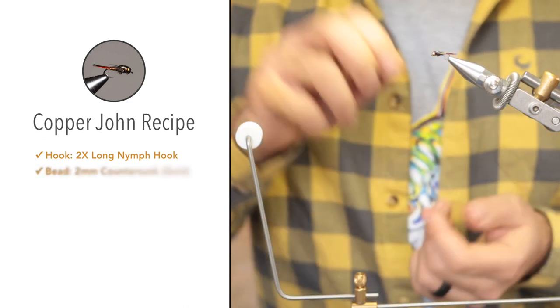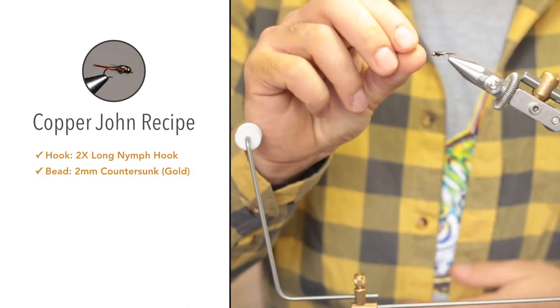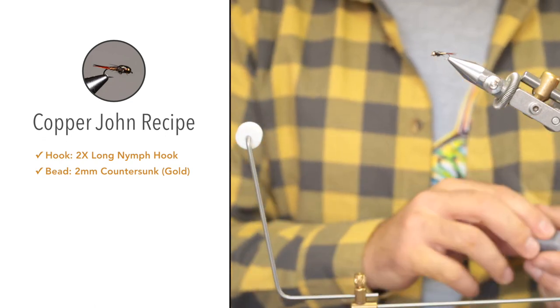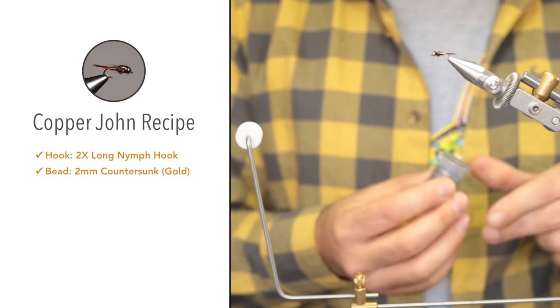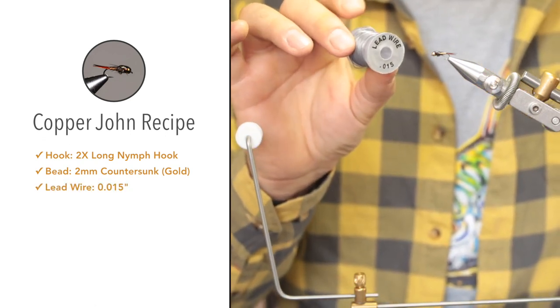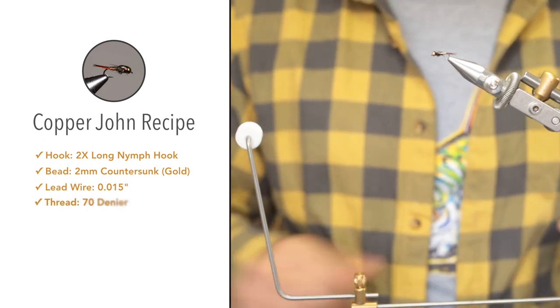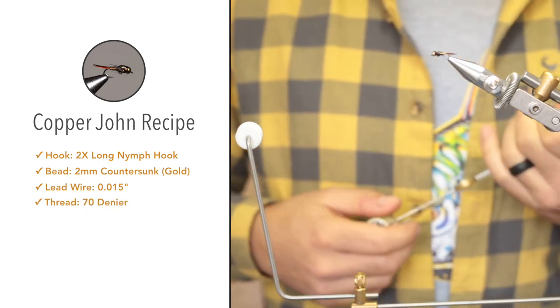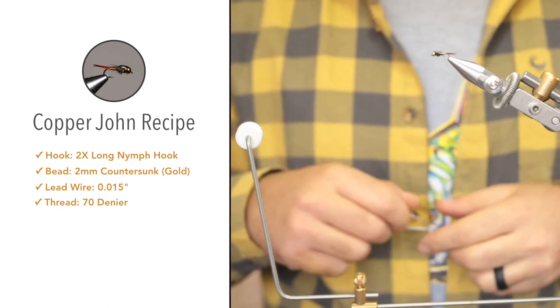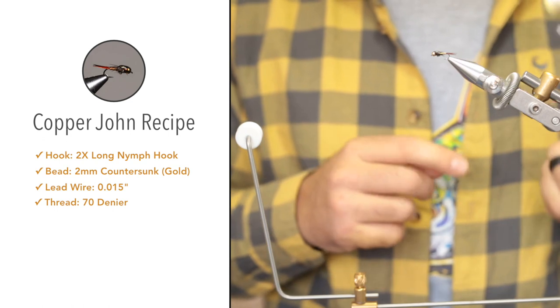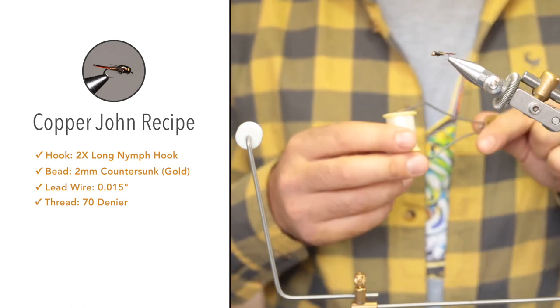For the bead, we'll be using a gold countersunk bead, 2.5 millimeter. For additional weight and to build up bulk in the thorax, we'll use 0.015 inch lead wire. For thread, we're using any 70 denier or smaller thread in brown, black, or white. I'm using very thin thread because this is a smaller fly.